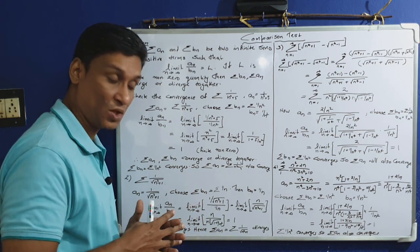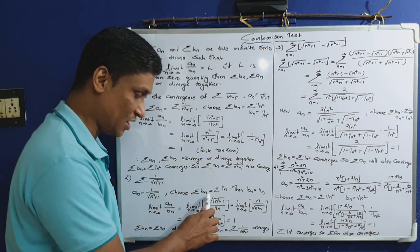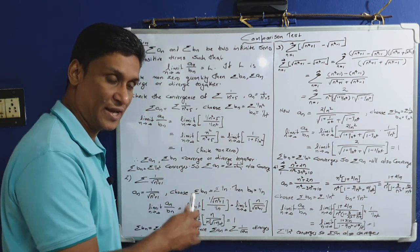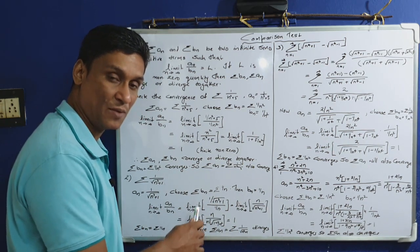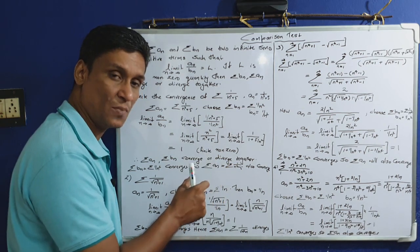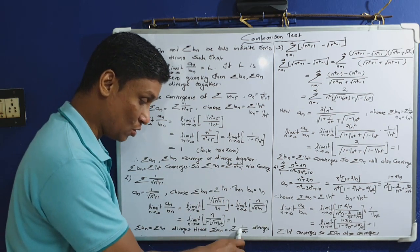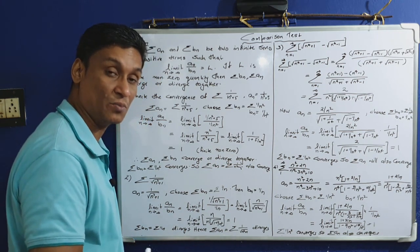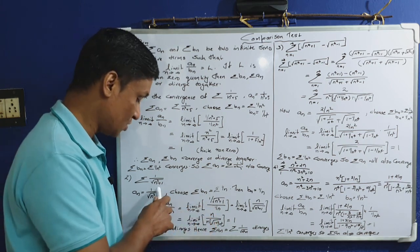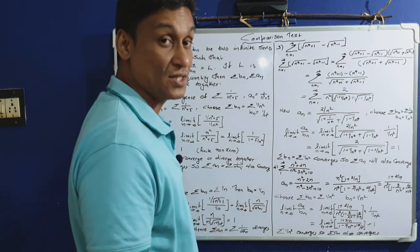Limit n tends to infinity of a_n by b_n equals 1, which is a finite nonzero quantity. Sigma b_n is sigma 1/n, which is divergent. Since the limit is a finite nonzero quantity and sigma b_n diverges, sigma a_n equal to sigma 1/√(n²+1) also diverges. This series is divergent, as proved by the limit comparison test.